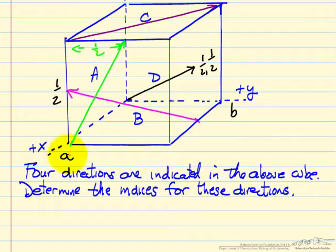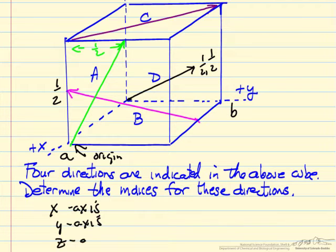And so when I'm interested in this direction A, I'm going to make this end of the arrow the origin, and then look at three axes and what the projection is on that axis in terms of the unit cell dimension. So for the x axis, we're at the origin, so that would be zero. For the y axis, we're one half of the dimension b. So from here to here, that distance is b, so this is one half of b.